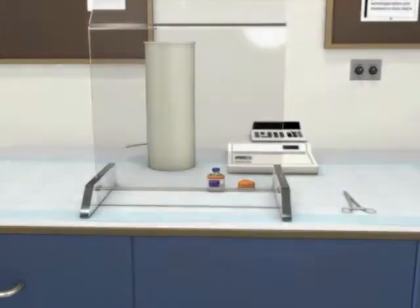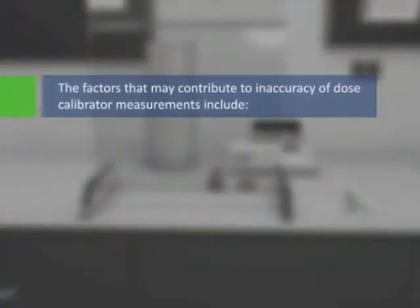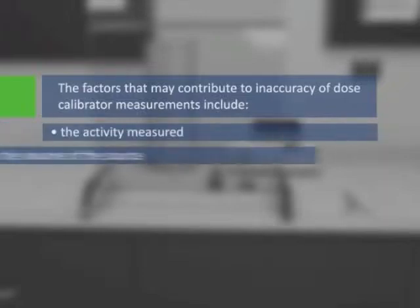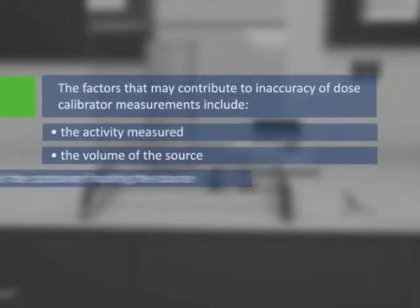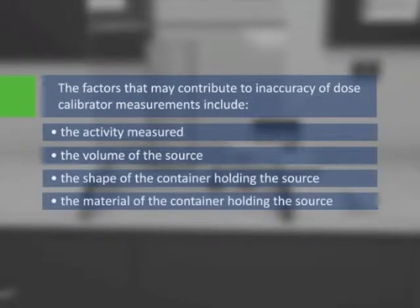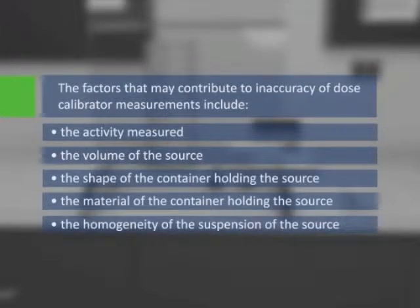The factors that may contribute to inaccuracy of dose calibrator measurements include the activity measured, the volume of the source, the shape of the container holding the source, the material of the container holding the source, and the homogeneity of the suspension of the source.